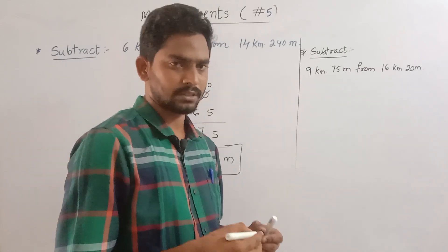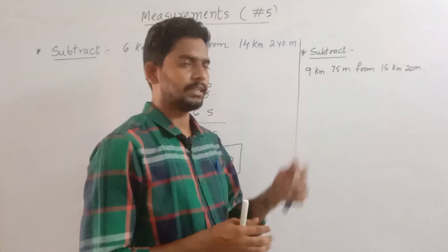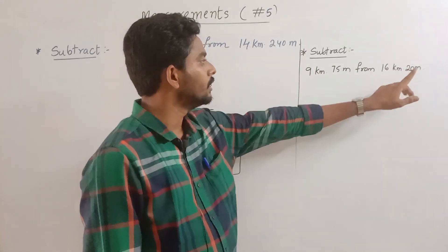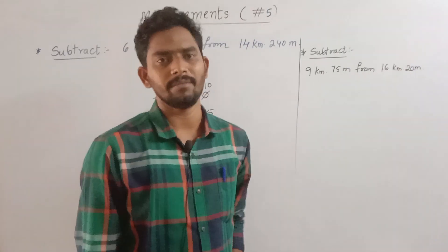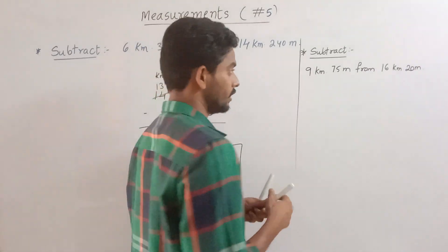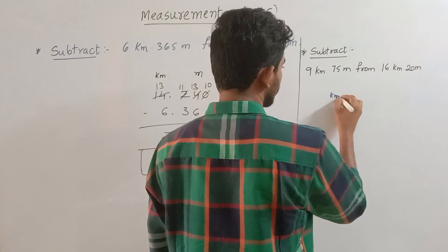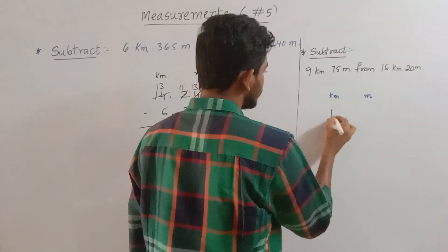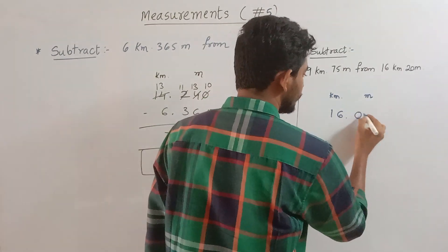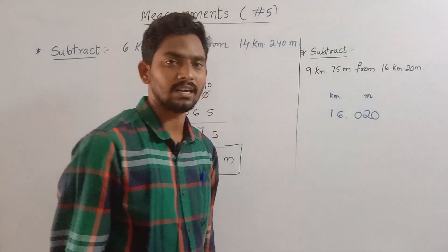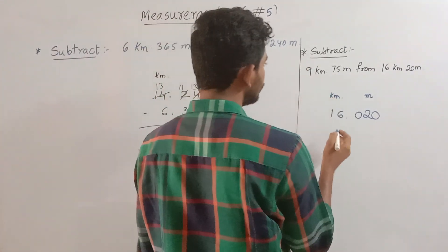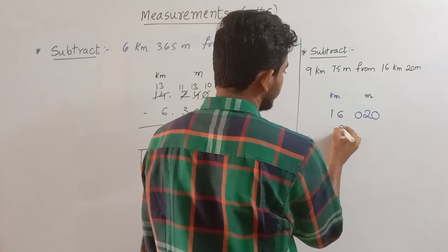Next question: subtract 9 km and 75 m from 16 km and 20 m. 16 km and 20 m, then subtract.